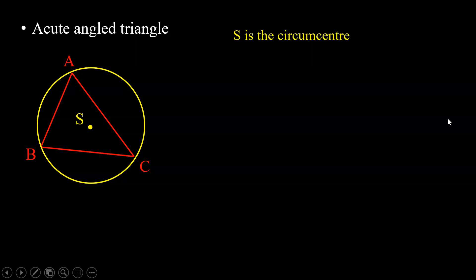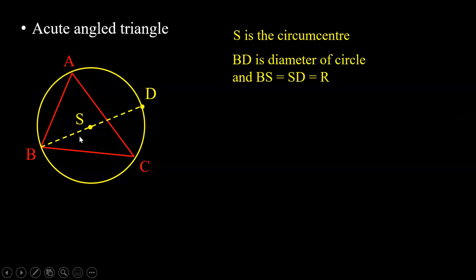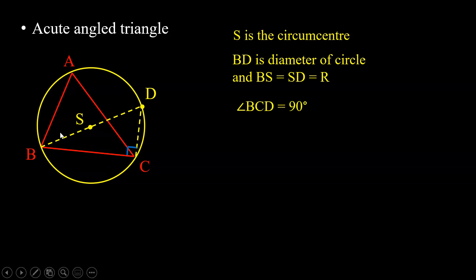We join point B and point S, and extend this line so it meets the circle at point D. So BD is a diameter, meaning BS = SD = R, the circumradius. Now we join points C and D to get triangle BDC. This triangle is a right angle triangle because the angle in a semicircle is 90 degrees, so angle BCD = 90°. Furthermore, angles BAC and BDC are equal because they are angles in the same segment.